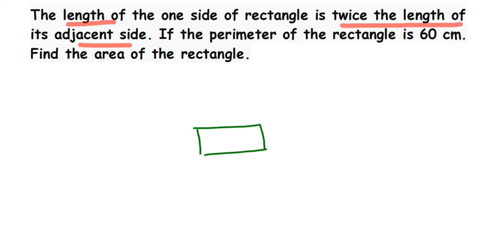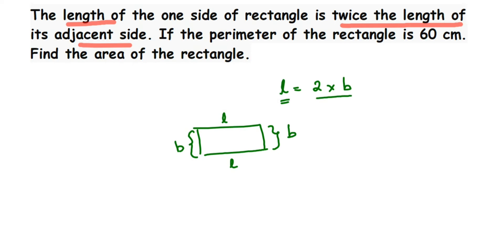For example, suppose this is a rectangle — we know this is the length, and its adjacent side is nothing but this side, which is the breadth. So they are saying that length is twice — two times — its adjacent side, and the adjacent side is the breadth. So the relationship is: length is twice the breadth.